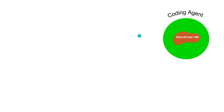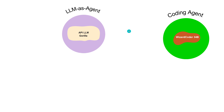Now that we understand the methodology of WizardLM and WizardCoder, how can we extend this? What is the next technology jump? Let's say we have a coding agent - WizardCoder with 34 billion trainable parameters - a specific agent for Python coding where the core is a large language model trained for that particular task.